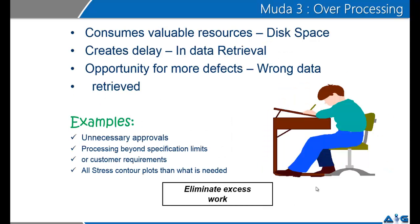The third muda is over-processing — doing more than necessary. Over-processing will consume valuable resources like disk space, create delays, and generate more opportunity for defects. The most common examples of unnecessary processing include unnecessary data being captured in forms, unnecessary approval processes, processing beyond specification limits, and unnecessary reports, charts, and graphs being built which are largely unnecessary in business. You must eliminate excess work in business.